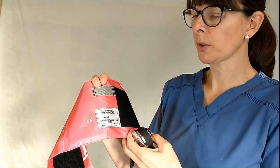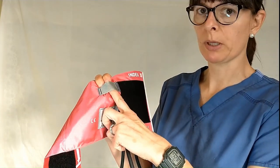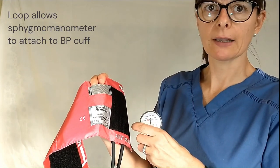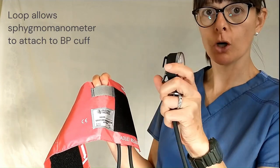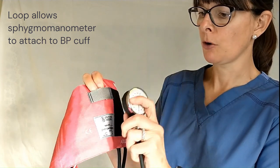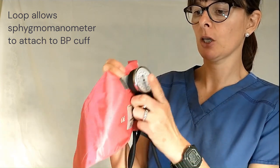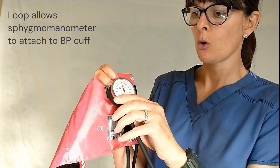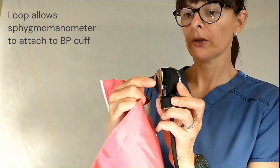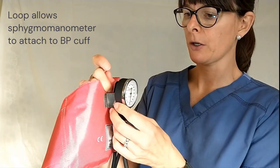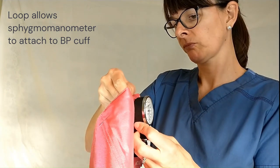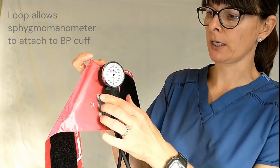And then one more part we need to discuss is this little loop here. So this is actually a nifty little device because you can hook the sphygmomanometer either from the bottom with the hook in here and hold it in place, or if you prefer there are these two little prongs back there. You can actually hook it this way and it'll sit right here.